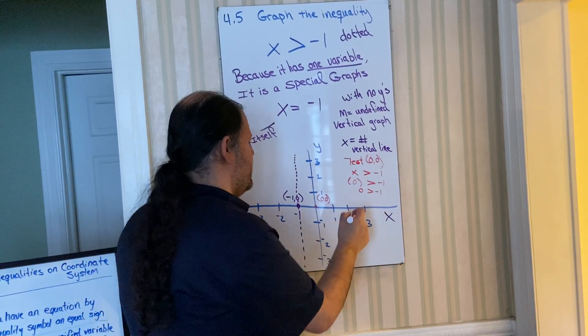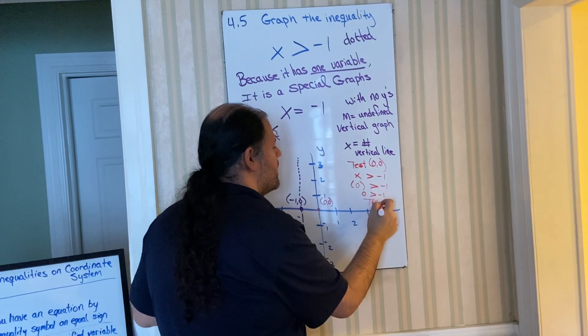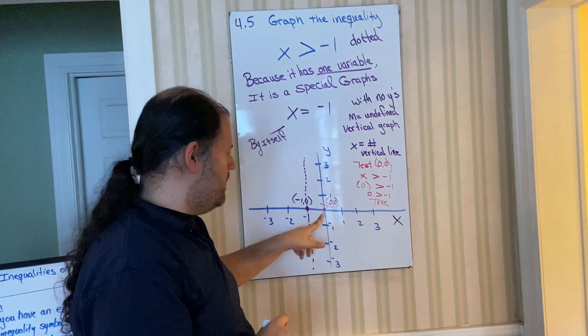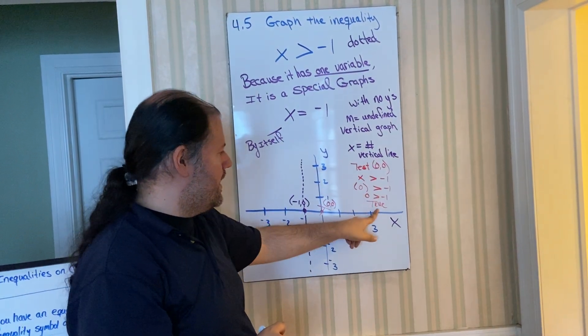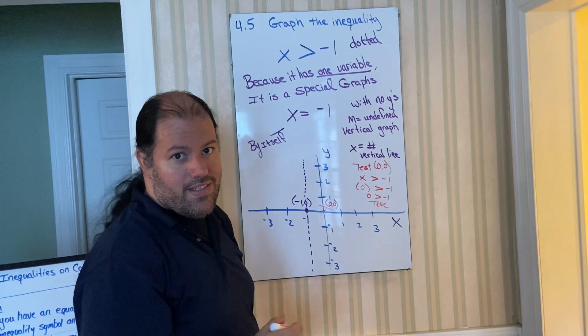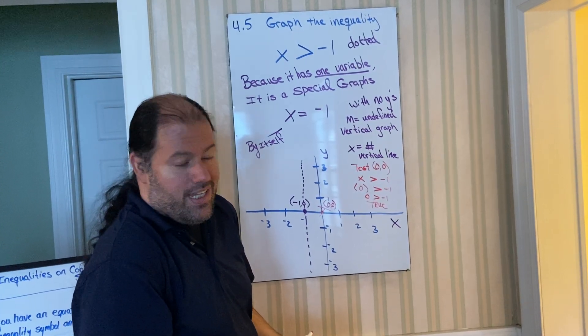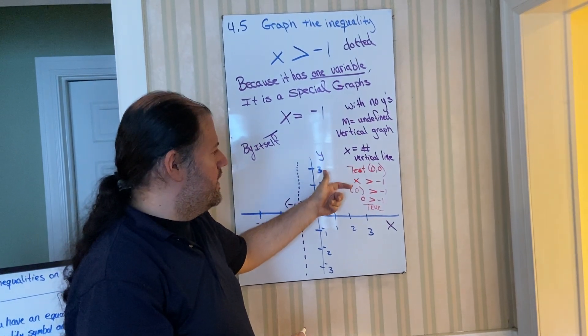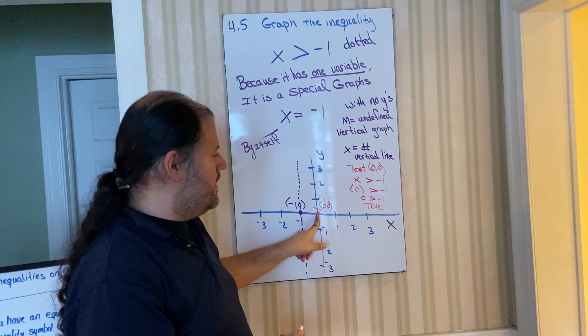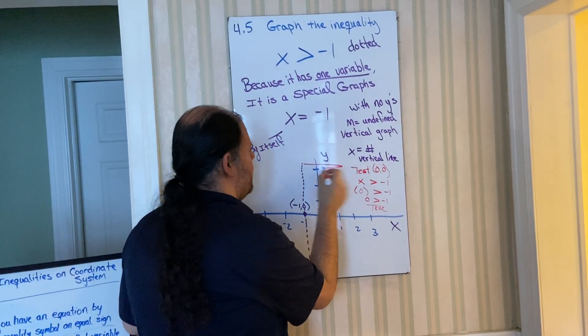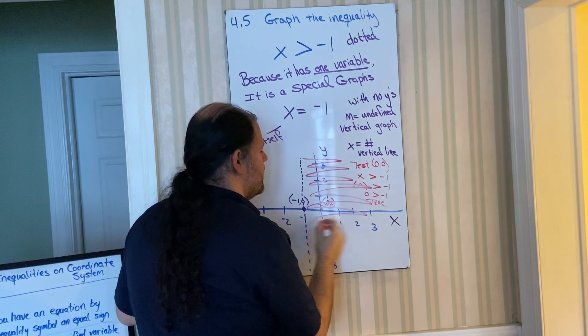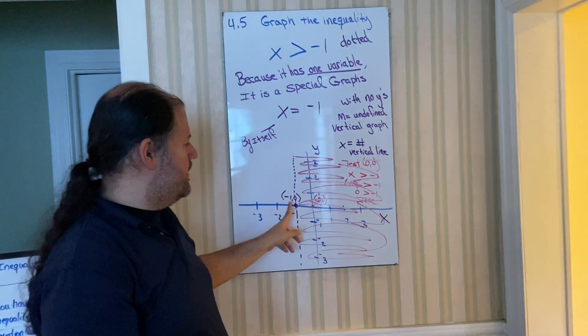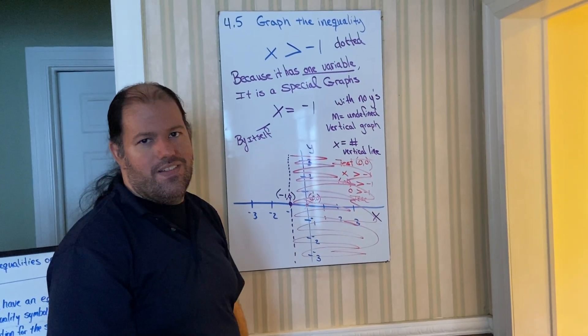We're in a true statement. We're in agreement. So this would be true, because that's where my test point is. Test point zero, zero. We got a true. So I put a T there. Then shade in only the true side, okay? So that was step one, step two, step three, and now shade. Step four. There we go. We just graphed x is greater than negative one.